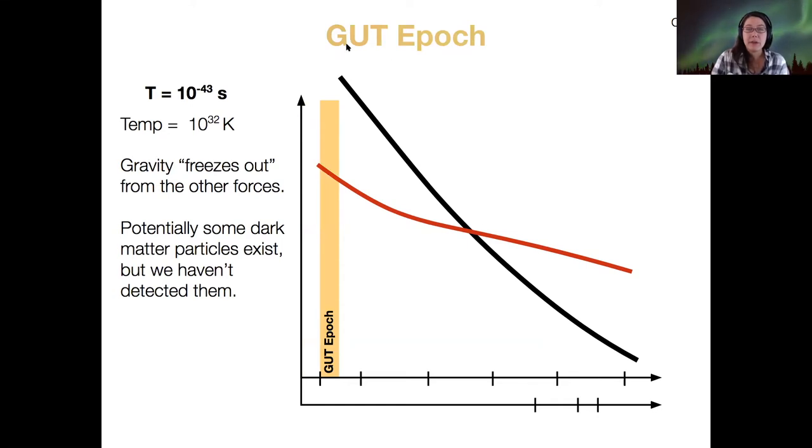Next comes the grand unified theory epic. So at this point, we do have grand unified theories that tie together all of the fundamental forces except gravity. So by the time that the universe is 10 to the minus 43 seconds old, barely an instant, and the temperature is just a balmy 10 to the 32 Kelvin, gravity is now frozen out from the other forces. So essentially what that means is that the temperature is low enough that gravity is no longer unified with the other four fundamental forces. Without getting too deep into the details, each of those forces will separate from each other at lower and lower temperatures, and gravity is the first to go. It's possible that some dark matter particles exist in this time, but we have not detected them yet.